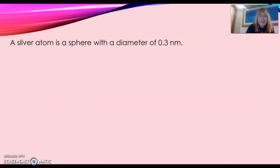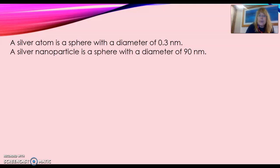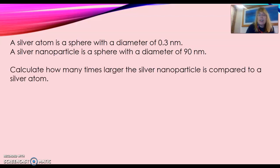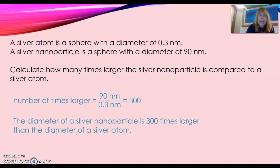Now let's look at another example. A silver atom is a sphere with a diameter of 0.3 nanometers. A silver nanoparticle is a sphere with a diameter of 90 nanometers. Calculate how many times larger the silver nanoparticle is compared to a silver atom. You take the bigger number divided by the smaller number, and it gives you an answer of 300 — so the silver nanoparticle is 300 times bigger than the silver atom.